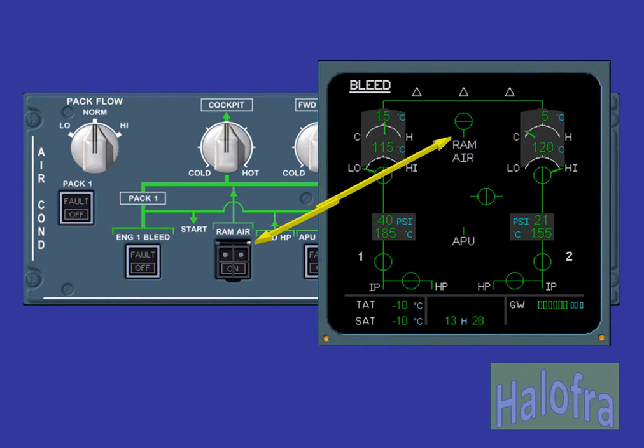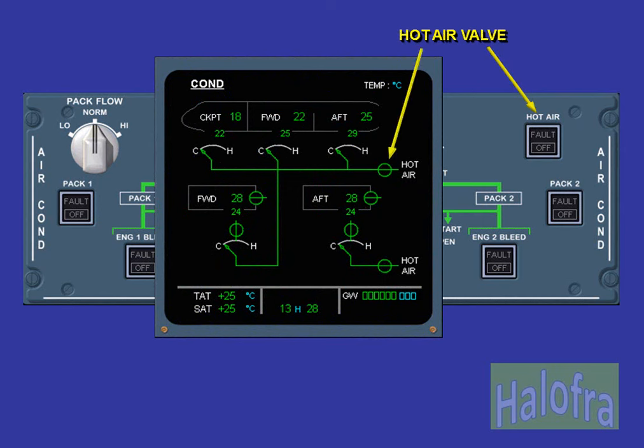The guarded RAM air switch controls the RAM air flap. In the example shown, the RAM air flap is indicating closed. Use of the RAM air switch is restricted to abnormal conditions that will be discussed later. The hot air switch is associated with the hot air valve, or TAPRV for the A318. There is a hot air valve indication on the ECAM COND page. In the example shown, the valve is indicating open.